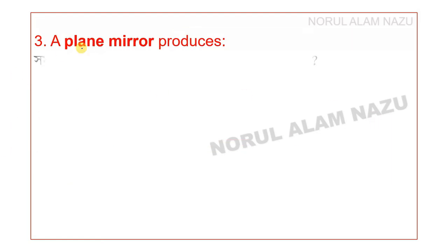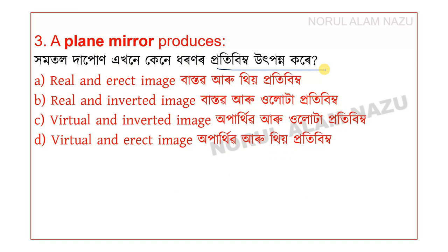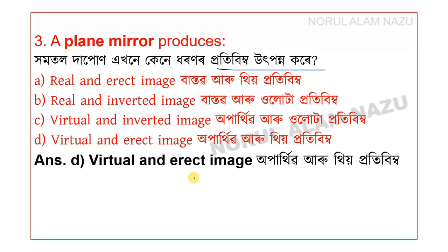Question 3: A plane mirror produces a virtual and erect image. A plane mirror produces a virtual and erect image that is the same size as the object.